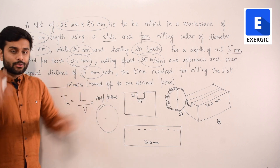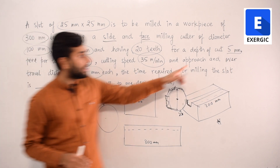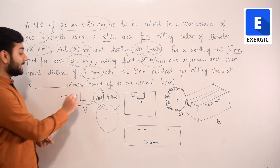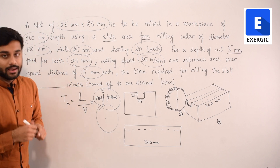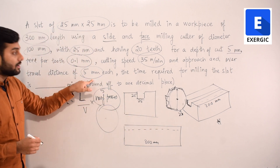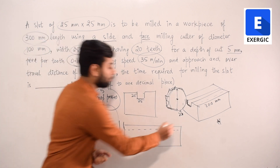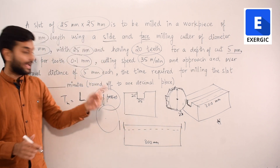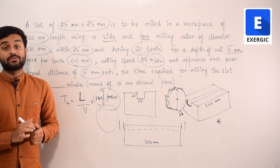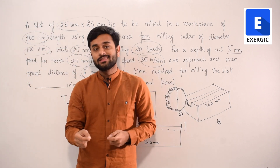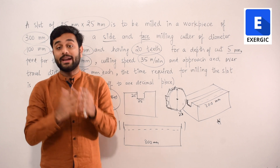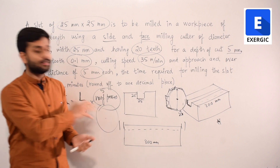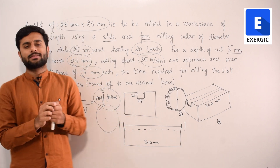We know the total depth is 25 mm and in one pass it covers only 5 mm depth, so 5 passes are needed. The total length is not simply 300 mm — the question also gives approach and over travel of 5 mm each. But in milling, there is one additional, compulsory approach that must be accounted for. We've covered this concept in the course, but let me briefly explain why it is needed.